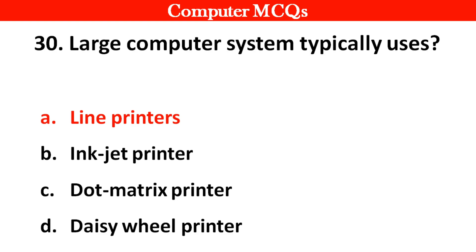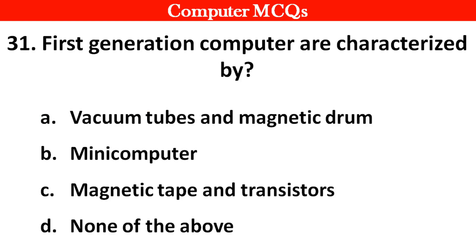First generation computers are characterized by: option A vacuum tubes and magnetic drums, B mini computers, C magnetic tapes and transistors, D none of these. Right answer is option A, vacuum tubes and magnetic drums.